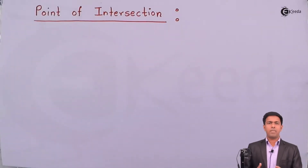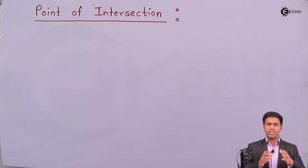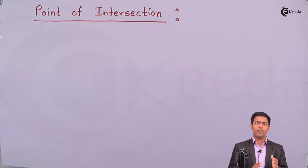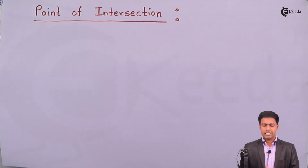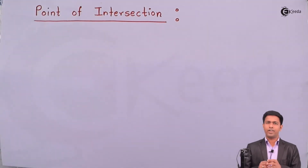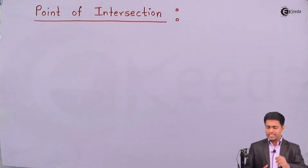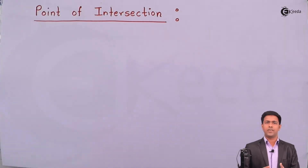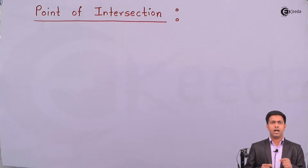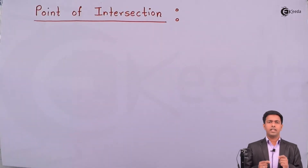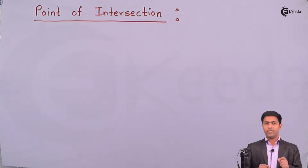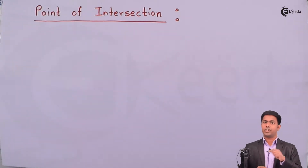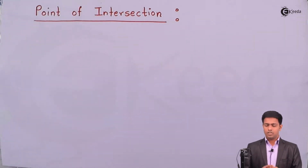Welcome back to the next video of curve tracing. Here we are going to learn the first property of curve tracing, that is the point of intersection with the coordinate axis. So what is the point of intersection? This is a concept you have been learning since school days — these are the points at which our curve intersects the coordinate axis.